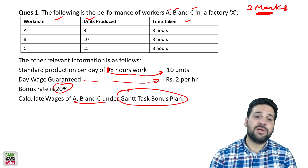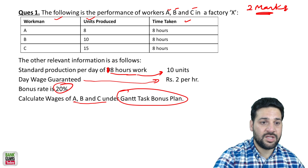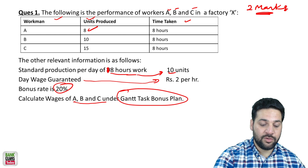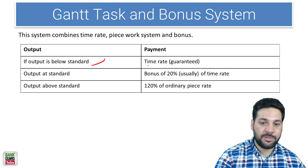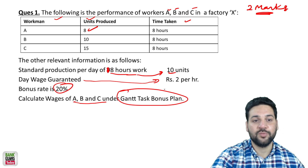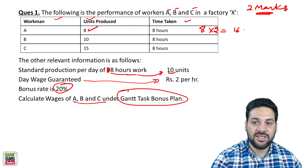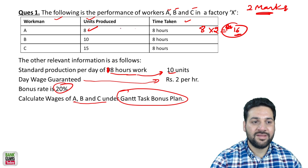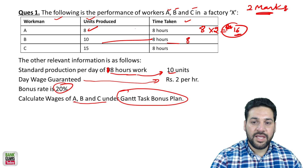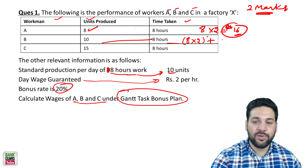If the output is below standard — standard is 10 units and output is 8 — payment is made according to time rate. If it is at standard, 20 percent bonus is given. If it is above standard, 120 percent of the ordinary piece rate applies. For worker A: 8 hours multiplied by rupees 2 per hour equals rupees 16. For worker B: 8 multiplied by 2 equals rupees 16, plus 20 percent bonus of rupees 16.